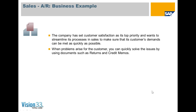A business example is that a company has a set of customers and they want to satisfy them highly. It's their top priority to streamline the sales process so that customer demands can be met quickly, accurately, and every time possible. When problems arise, you can quickly solve issues using documents such as returns and credit memos, which are part of the standard offering in Business One.